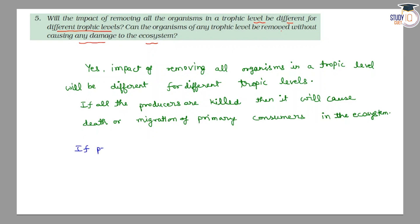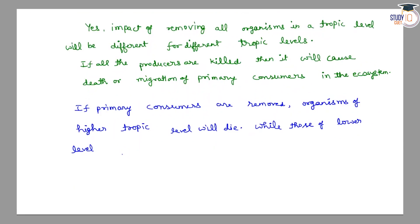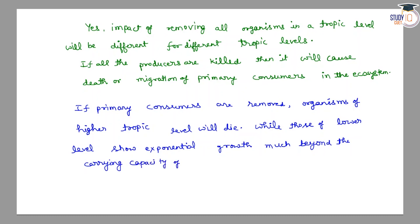If primary consumers are removed, the organisms of higher trophic levels will die, while those of lower levels — the producers — will show exponential growth, much beyond the carrying capacity of the environment.